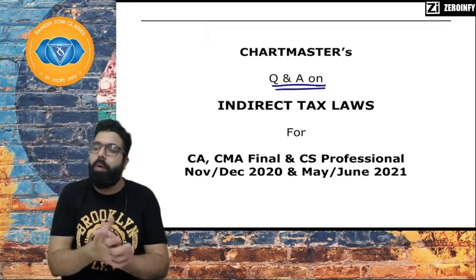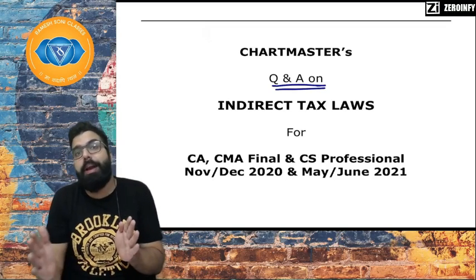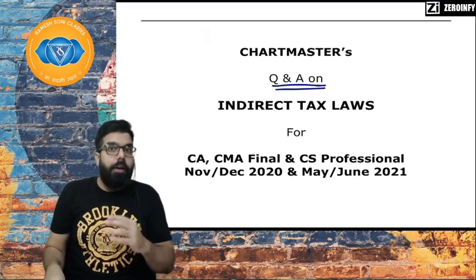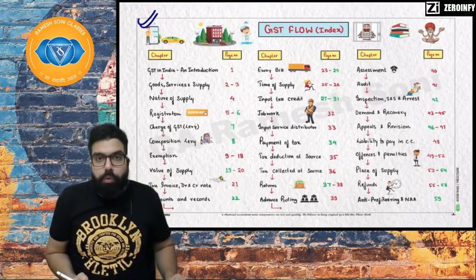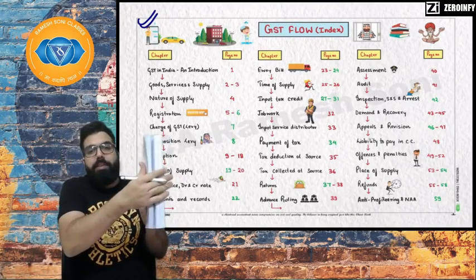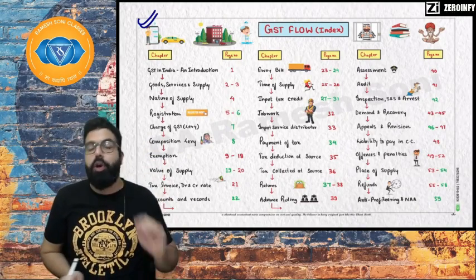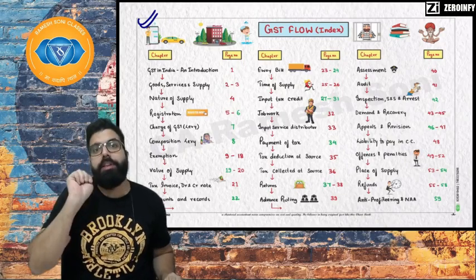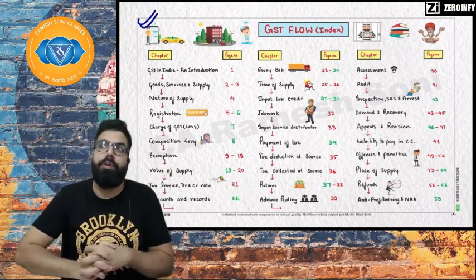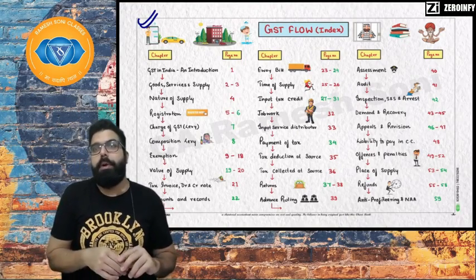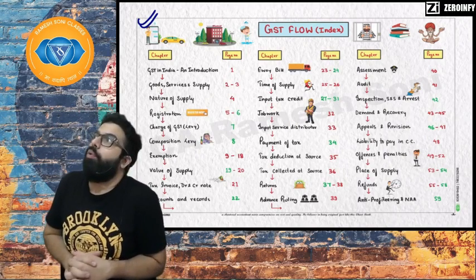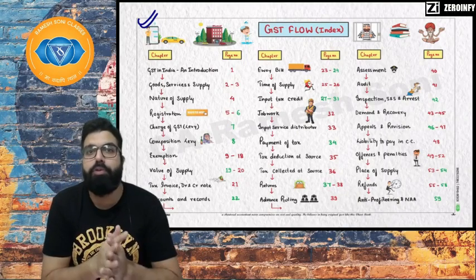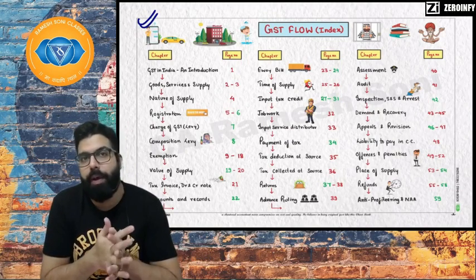In regular classes, we read the law line by line, interpret it, then summarize it in the chart book. The chart book compresses the entire 700-page book into a 78-page chart book. This is the third edition — previously I gave large wall charts, but students found it inconvenient, so I transformed it into a compact book.